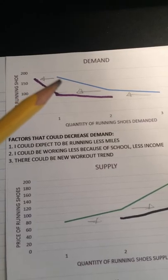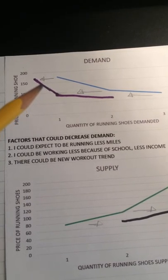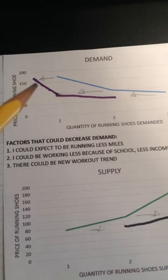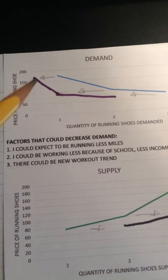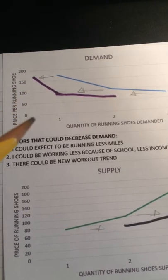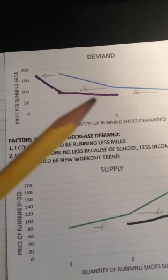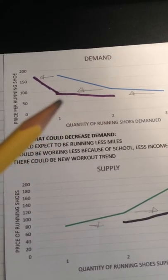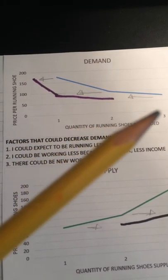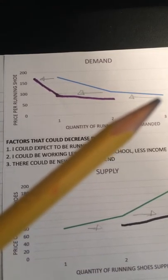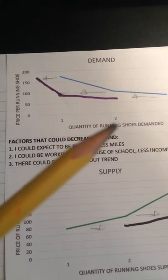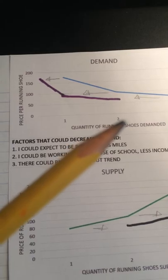We see this shift in the decrease in demand by this purple line here. Now at a price of $175, the quantity demanded is 0. At a price of $100, the quantity of running shoes demanded is 1. And at a price of $75, the quantity of running shoes demanded is now 2 instead of 3.